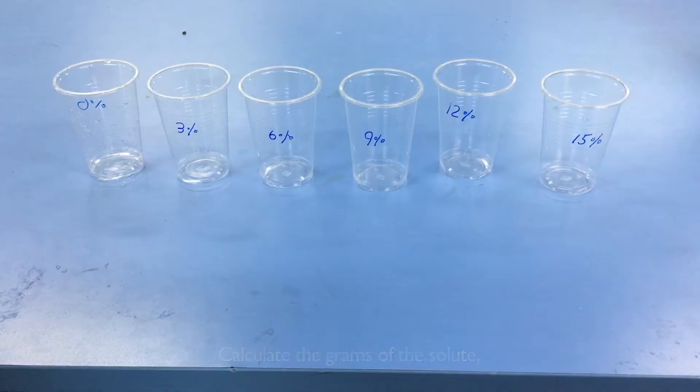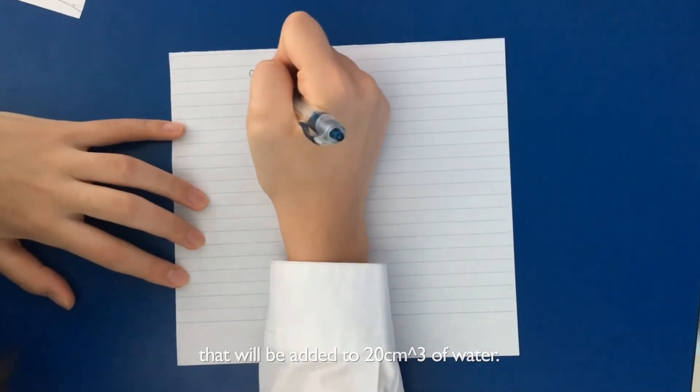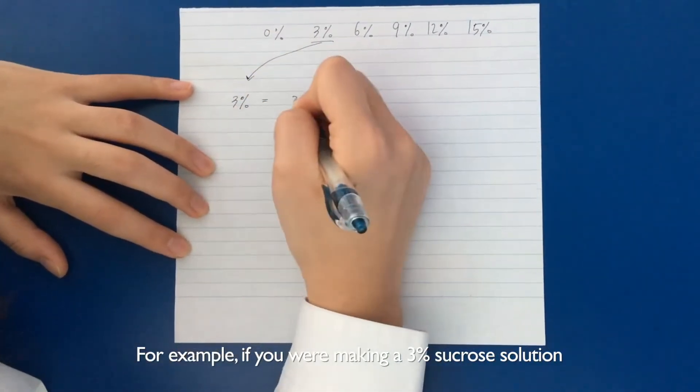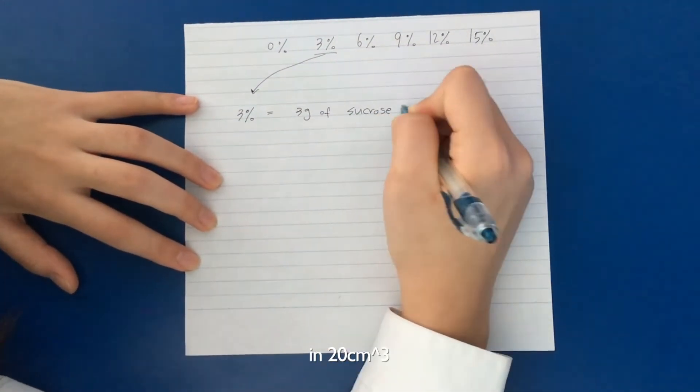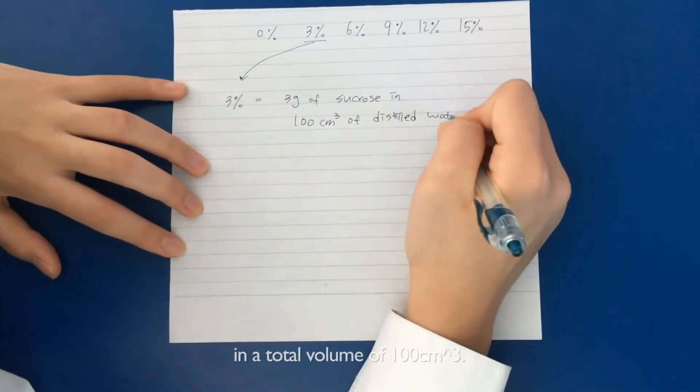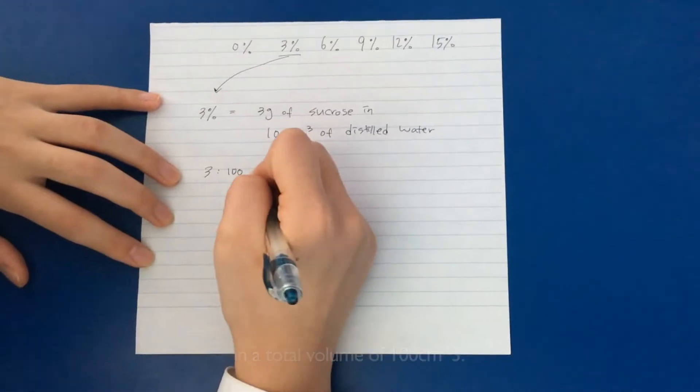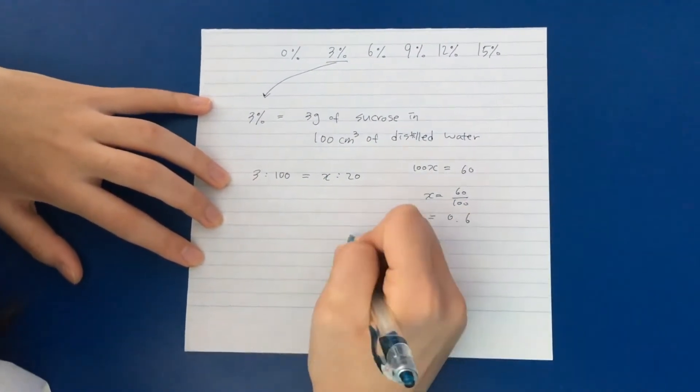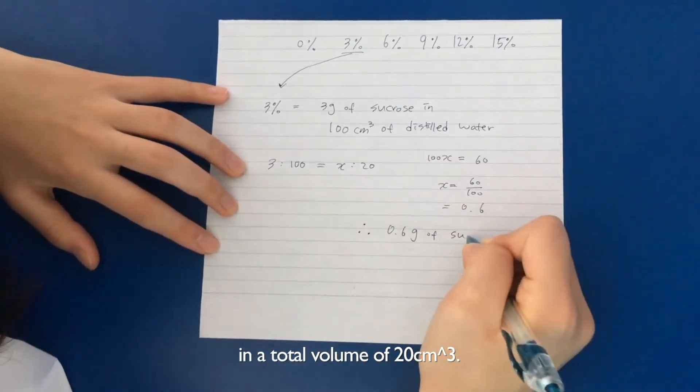Calculate the grams of solute, in this case sucrose, that will be added to the 20 cubic centimeters of water. For example, if we were making a 3% sucrose solution in 20 cubic centimeters, we would think 3 grams of sucrose in a total volume of 100 cubic centimeters. Therefore, in this case, we would only need 0.6 grams of sucrose in a total volume of 20 cubic centimeters.